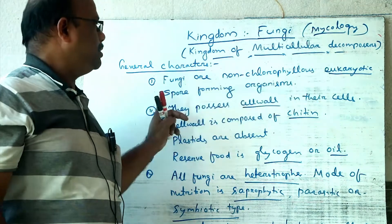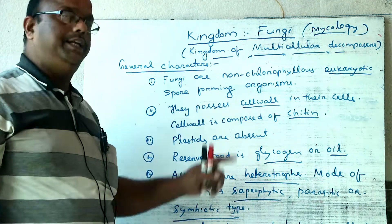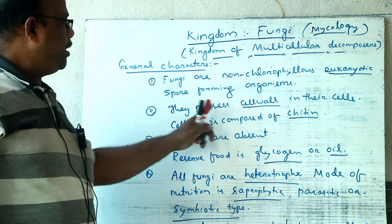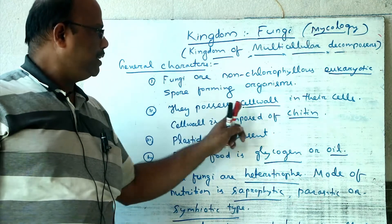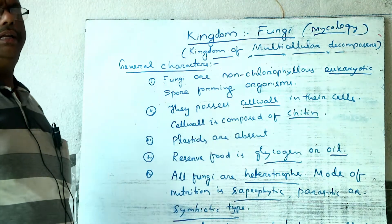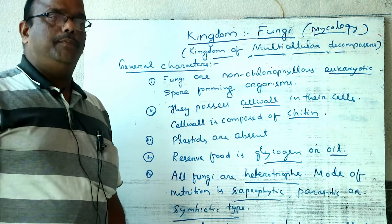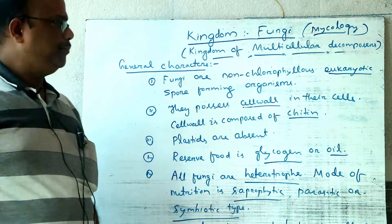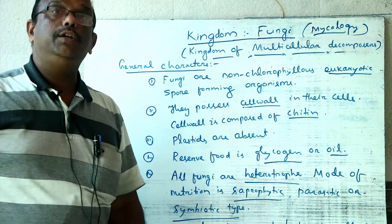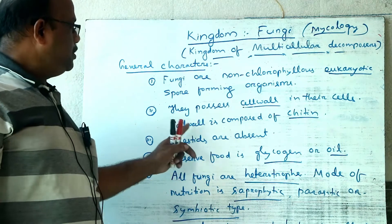All fungi are eukaryotic in nature. Any eukaryotic organism which possesses a cell wall in their cells just like plants, which forms spores during reproduction but has no chlorophyll pigments, is called fungi. The cell wall of fungi is composed of chitin, which is a type of derived polysaccharide — a carbohydrate composed of many N-acetyl glucosamine units. Fungi lack plastids; they do not possess chloroplasts, chromoplasts, or leucoplasts.